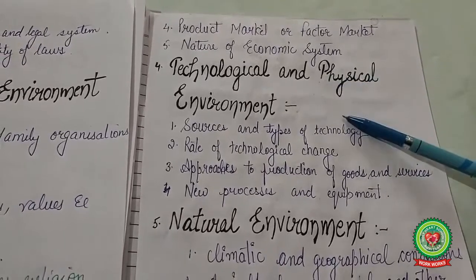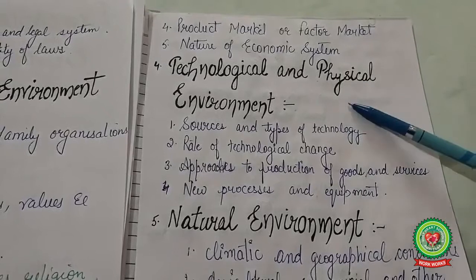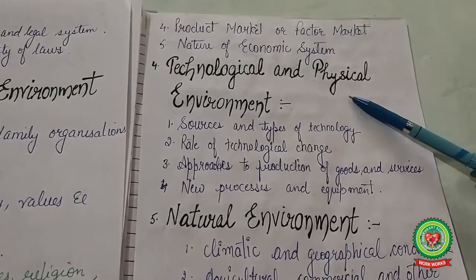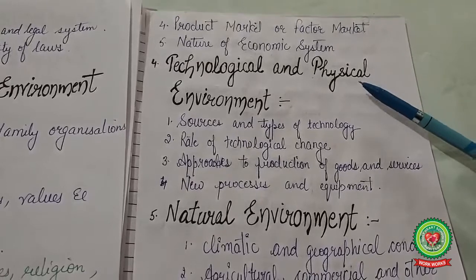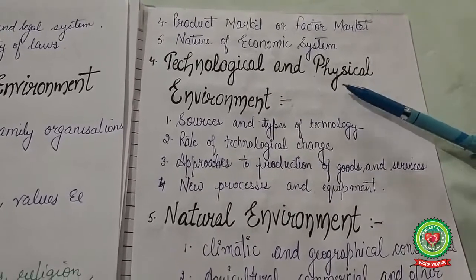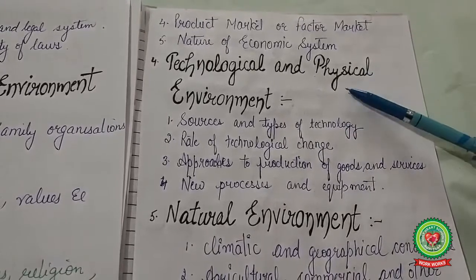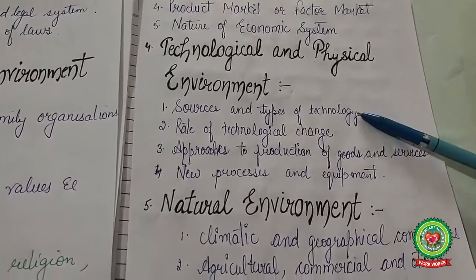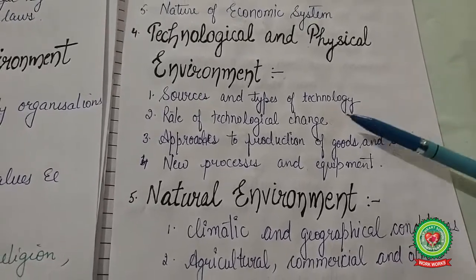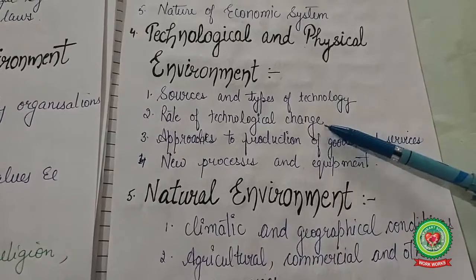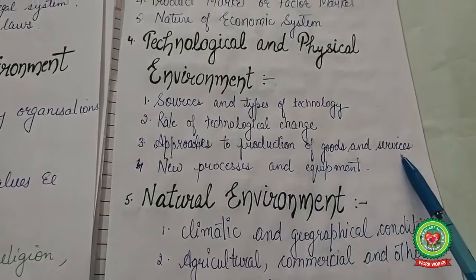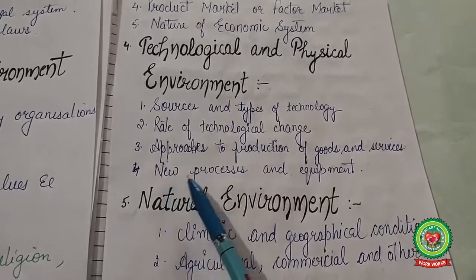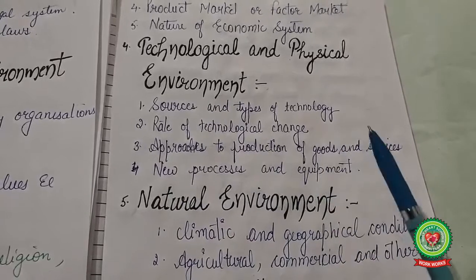The technological and physical environment covers how technology affects business enterprises. Examples include payments via ATM, debit card, credit card, and mobile apps like Google Pay, PhonePe, and Amazon Pay. It includes sources and types of technology used in production, the rate of technological change, approaches to production of goods and services — whether labor-intensive or capital-intensive — and new processes and equipment used for production.